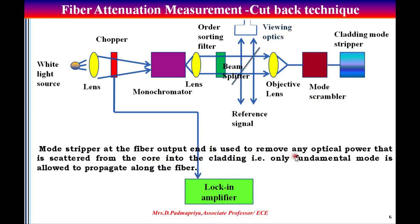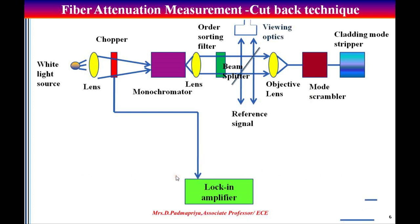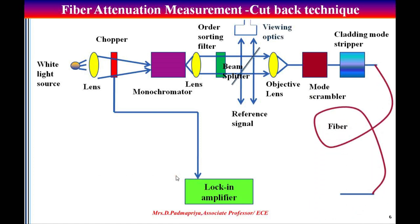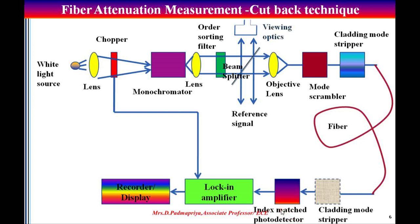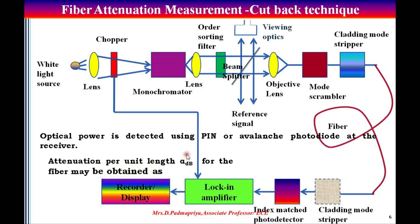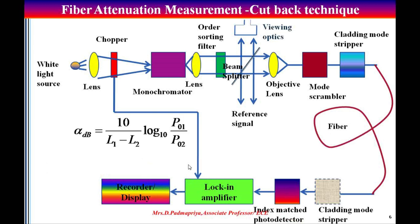The mode scrambling device is used for getting uniform distribution of power. Then it goes on to the cladding mode stripper, which is used for selecting only the fundamental mode of power. The fiber end is used to remove any optical power that can be scattered from the core into the cladding, so it will select only the fundamental mode and allow it into the fiber. Then the light rays are passed into the fiber, and the photo detector accepts these light rays and converts them into electrical signal. The photo detector used here may be a PIN or avalanche photodiode and is usually index-matched to the fiber output using an epoxy resin or index matching gel. The attenuation for unit length, represented as alpha in decibels, is given by: alpha_dB = (10 / (L1 - L2)) * log base 10 of (P_o1 / P_o2).